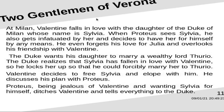At Milan, Valentin falls in love with the daughter of the Duke of Milan, whose name is Sylvia. When Proteus sees Sylvia, he also gets infatuated by her and decides to have her for himself by any means. He even forgets his love for Julia and overlooks his friendship with Valentin. The Duke wants his daughter to marry a wealthy lord, Thurio. Realizing Sylvia has fallen in love with Valentin, he locks her up to forcibly marry her to Thurio.